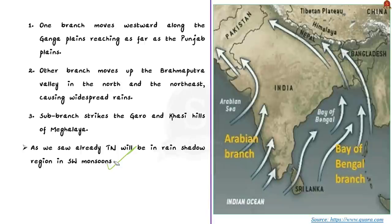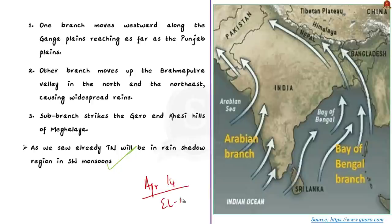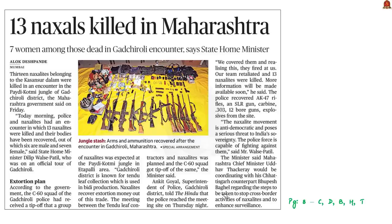Moving to the next article: 13 Naxals killed in Maharashtra. The C-60 commandos of the Maharashtra police killed 13 Naxals in an encounter. The term 'Naxal' is derived from the village Naxalbari in West Bengal, where the movement had its origin. Naxals are considered far-left radical communists supportive of Maoist political sentiments and ideology. Their origin can be traced to the split in 1967 of the Communist Party of India (Marxist), leading to the formation of CPI (Marxist-Leninist). They have been declared a terrorist organization under the Unlawful Activities Prevention Act of India 1967.